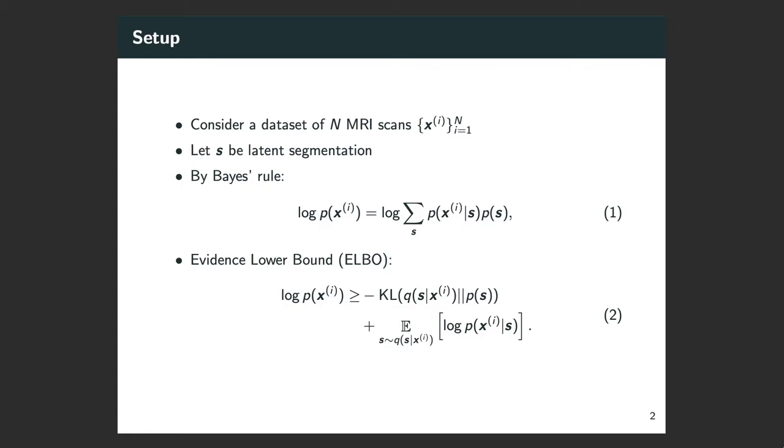We consider a dataset of MRI scans which we model as independent samples from the same distribution. Let s denote the latent segmentation. Using Bayes' rule, we can write the probability of observing our scan as a product of image likelihood and the prior distribution of s, then sum over all possible values of s.